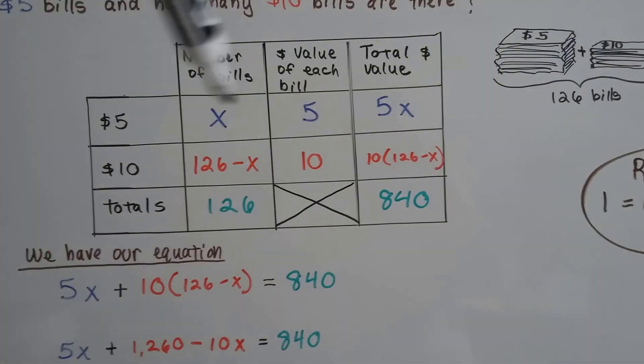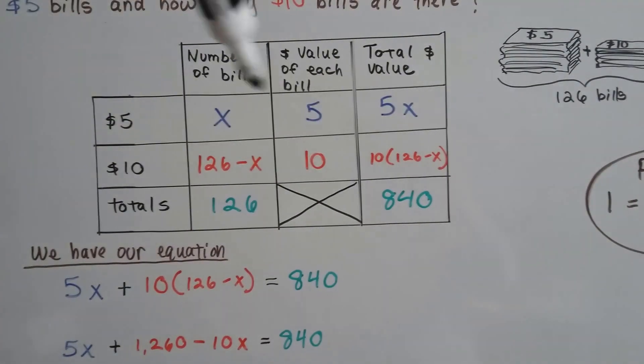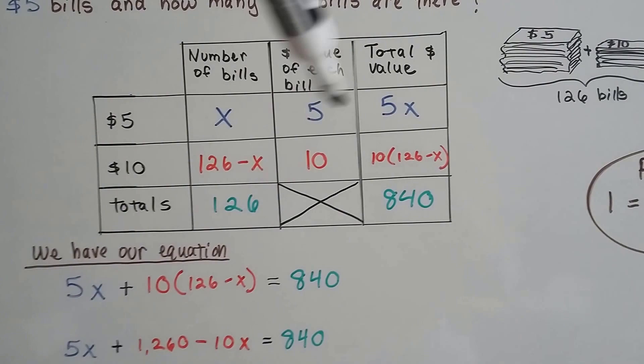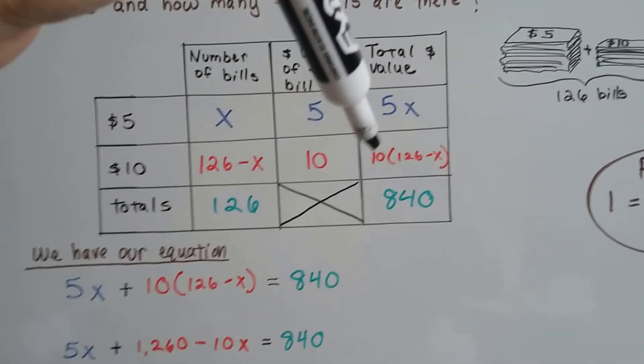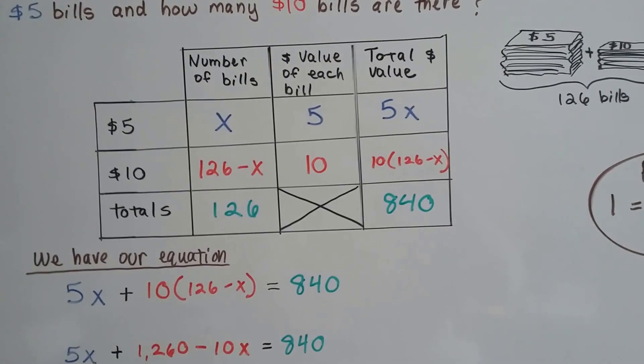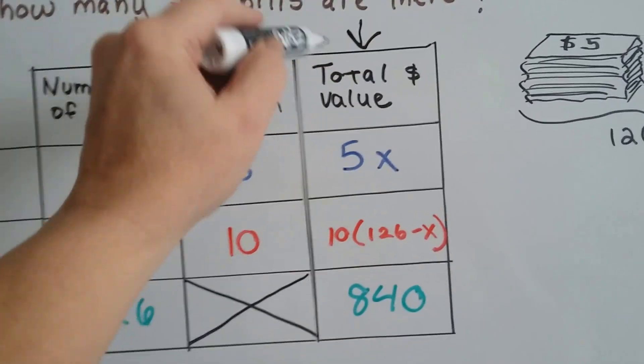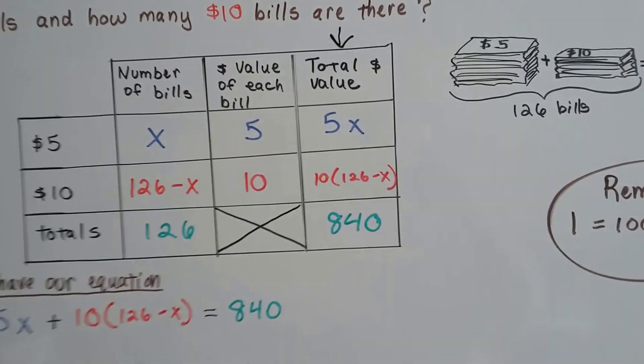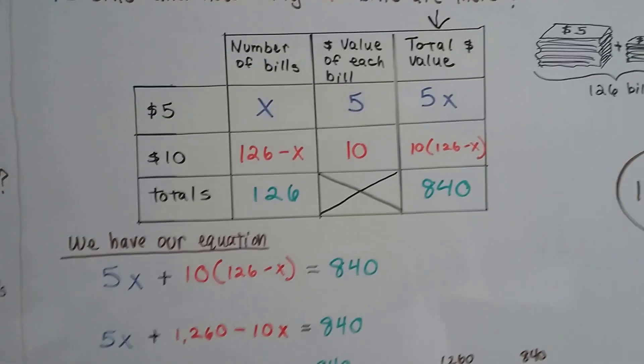The value of the $5 bill is 5. The value of the $10 bill is 10. We multiply these together to get 5X. And we multiply these together to get 10 times 126 minus X. We have our equation. It's coming down this column. 5X plus 10 times 126 minus X equals 840. That's our equation.